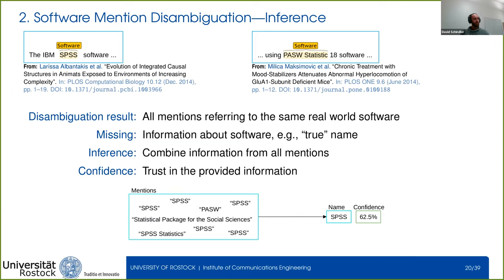Once integration is done, we know all mentions referring to the same real-world software. On the left we have a lot of mentions which all refer to one software. What is still missing is information about the software because we don't have an external link. This is where the inference step comes in — we combine information from all individual mentions and also assign a confidence expressing the trust we have in this information.